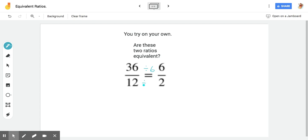Now, does that work on the bottom two? 12 to two? Well, 12 divided by six gives me two. So yes, they're equivalent. Because I was able to divide the top and the bottom by the same number to get my new ratio, they're equivalent.